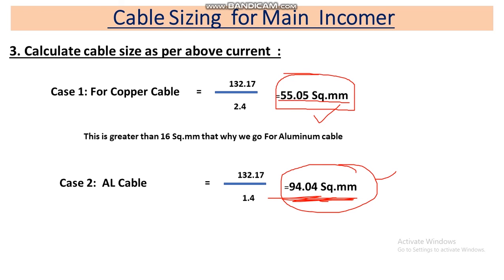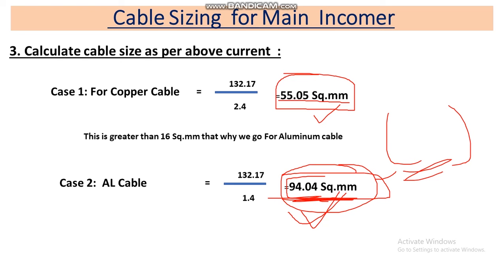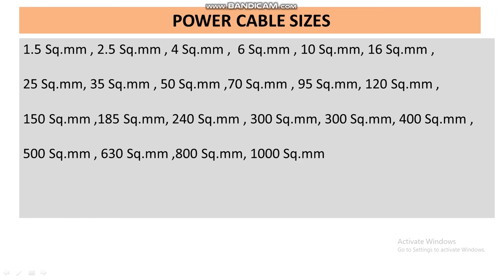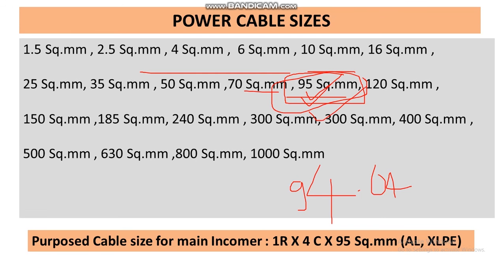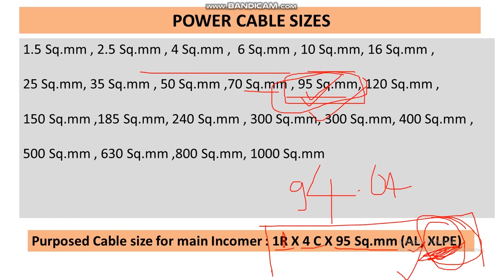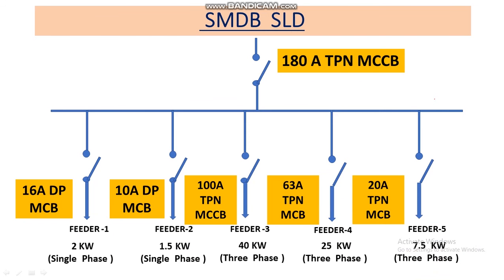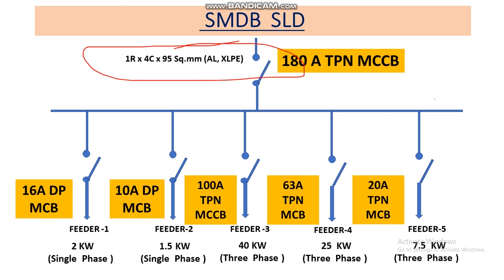Our calculated aluminum cable size is 94.04 square mm. We always go for a higher value, not below the calculated value. Looking at the cable selection chart, 94.04 is near 95 square mm. So our final proposed cable size for the main incomer is: 1 run, 4-core, 95 square mm aluminum XLPE insulation cable. This is the cable selected for the main incomer.